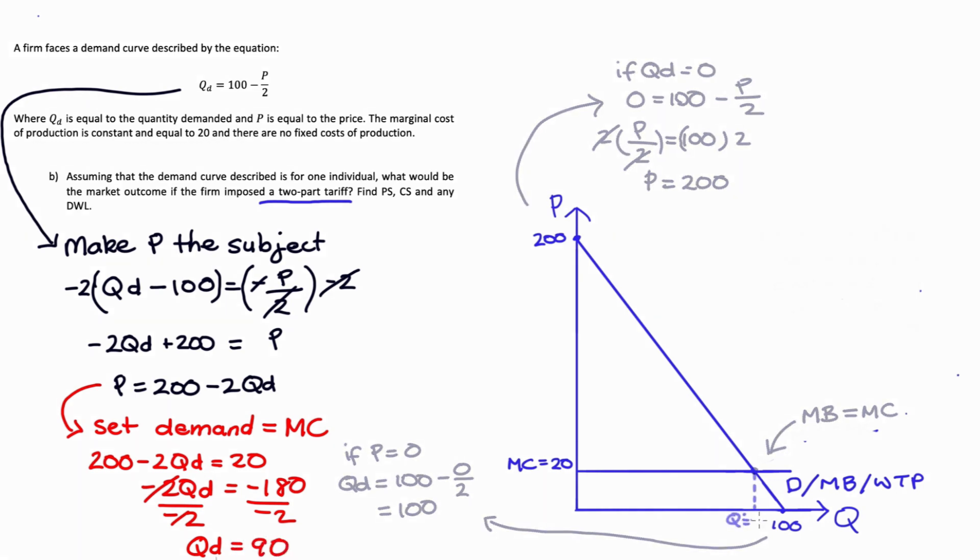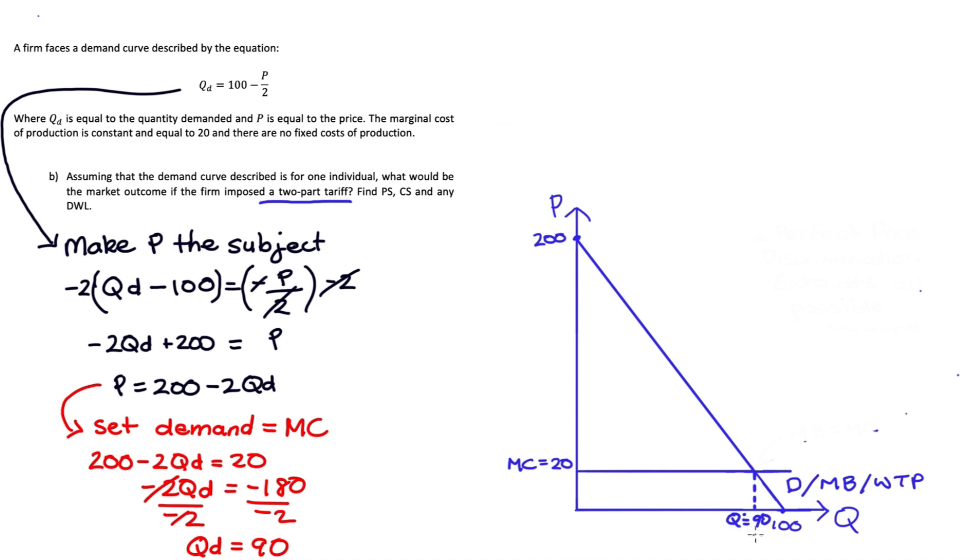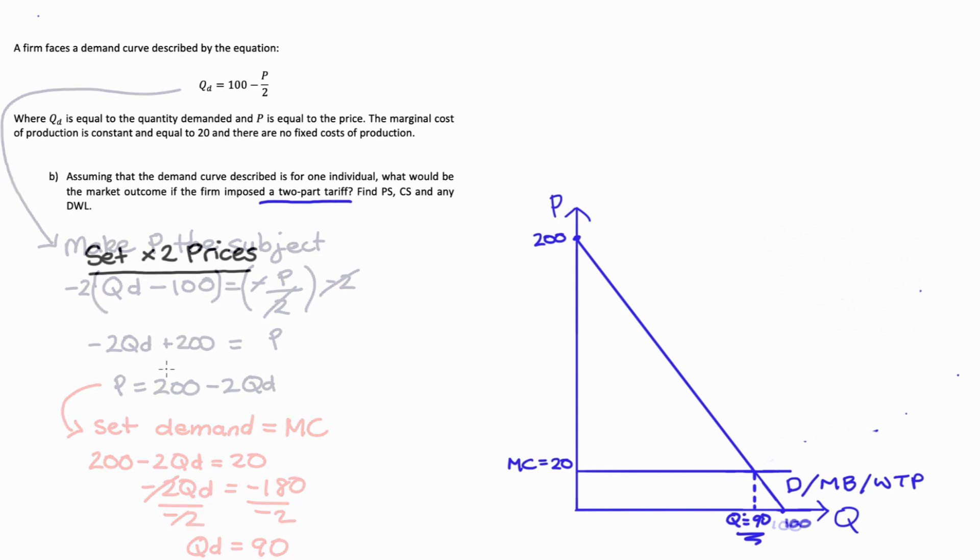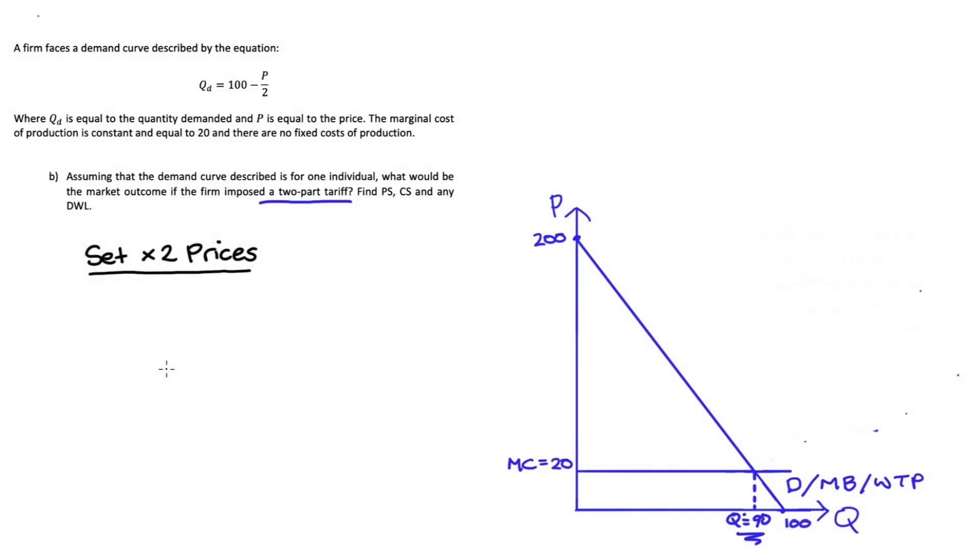So I'm just going to put that quantity on my diagram here. That will be Q star. That will be how much our firm will produce in this market. In terms of prices in the market, a two-part tariff involves setting two prices.